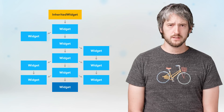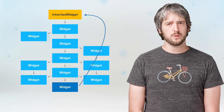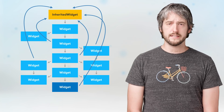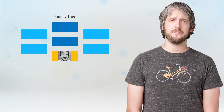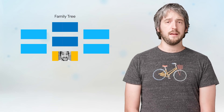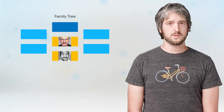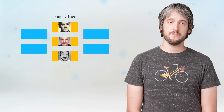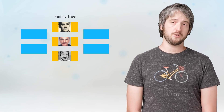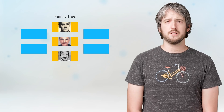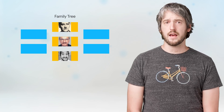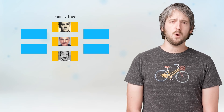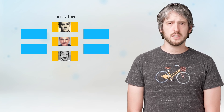When you put this widget in your tree, you can get a reference to it from any widget below it. This is why we call it an inherited widget. Think about a family tree. For example, I inherited my big nose from both my dad and my grandfather — they're both above me in the family tree, so I can inherit from them. To be clear, this is not inherited as in a class hierarchy, but inherited as in a widget hierarchy.